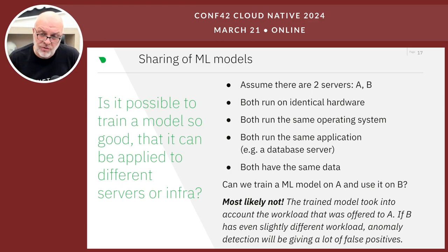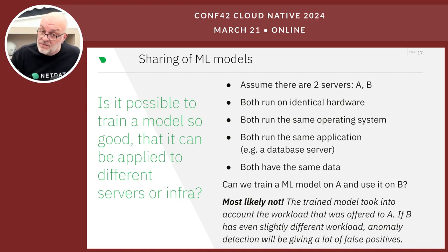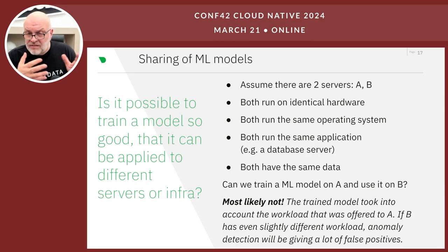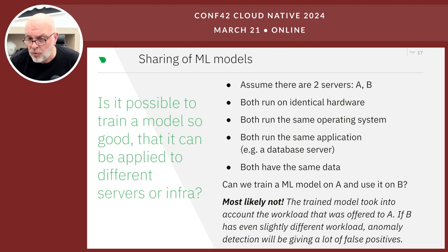Why not? Because the trained model has incorporated the workload. If the workload on B is slightly different — it runs some statistical queries or reports that A doesn't, or the load balancer spreads things not completely equally — then the machine learning model trained on A will not work on B. It will give false positives.